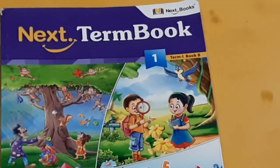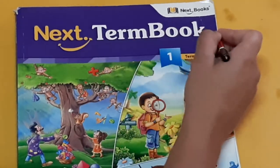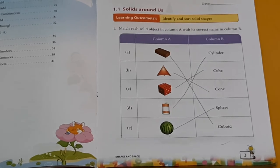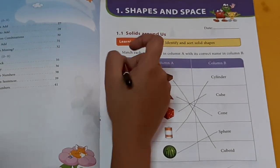Now, we will go to next term. Book one. Term one. Book B. Open page number three.